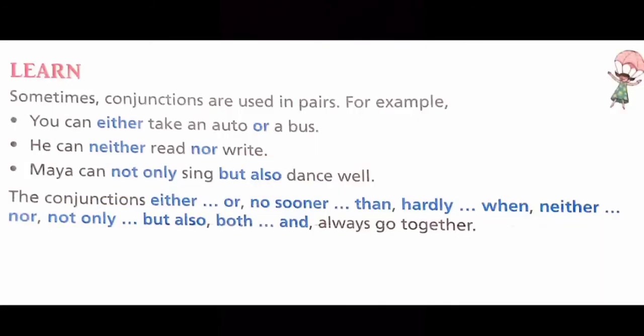Sometimes conjunctions are also used in pairs. For example, you can either take an auto or a bus. He can neither read nor write. Maya can not only sing, but also dance well. The conjunctions either/or, no sooner than, hardly when, neither/nor, not only/but also, and both/and also go together.